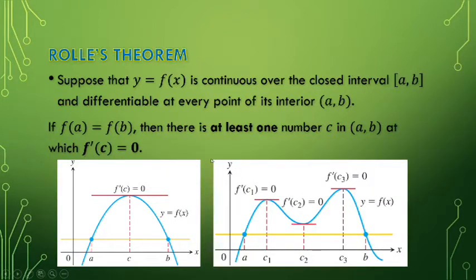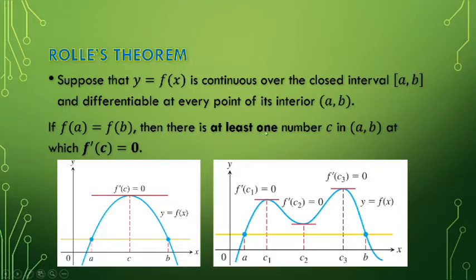We have the first theorem for this topic: Rolle's theorem. Suppose that the function y = f(x) is continuous over the closed interval [a, b] and differentiable at every point on its interior, that is the open interval (a, b). If f(a) is equal to f(b), meaning the two values of the function are equal,